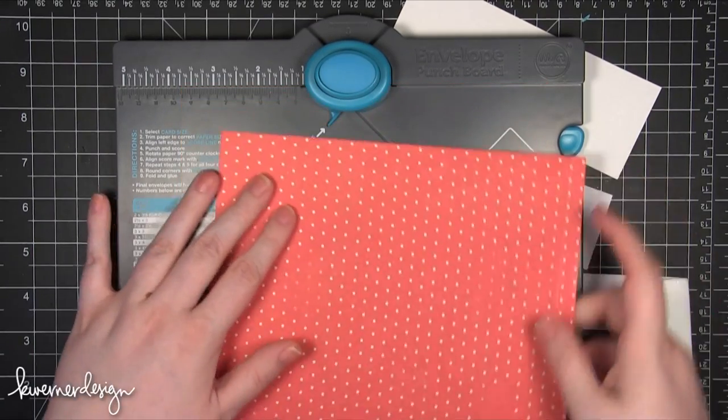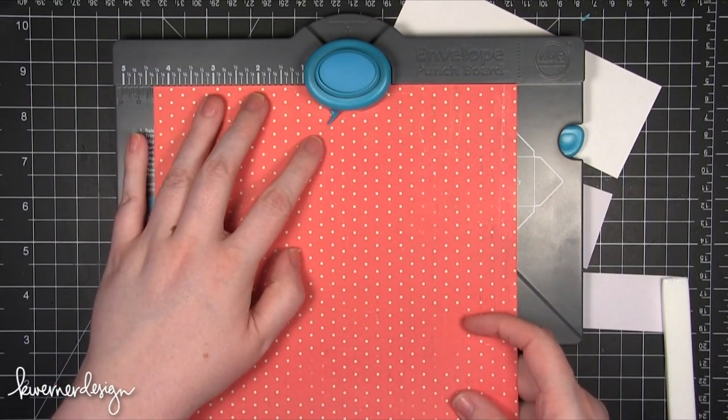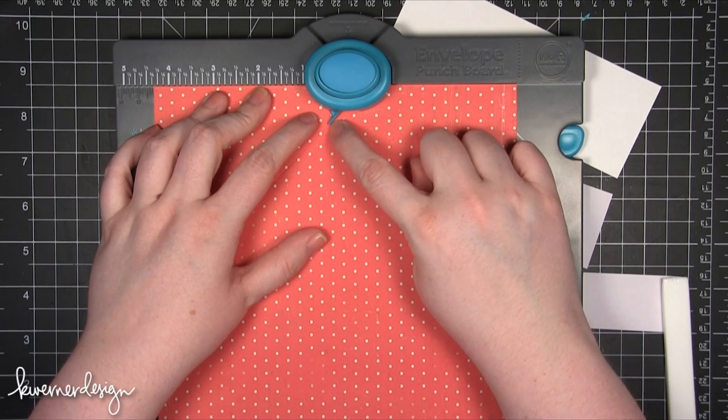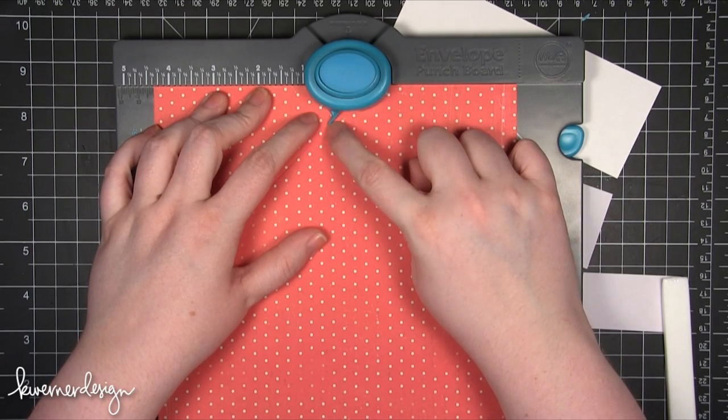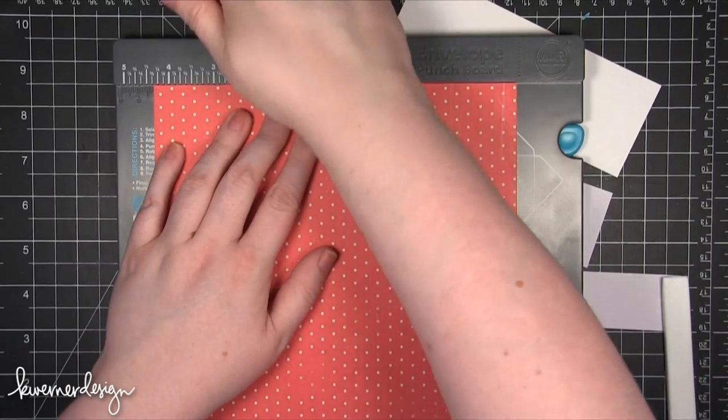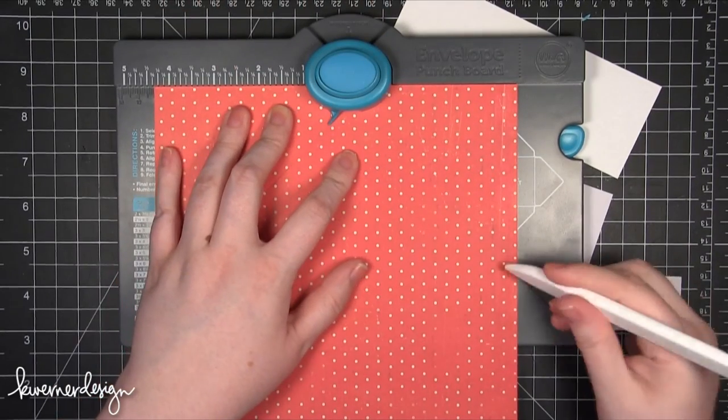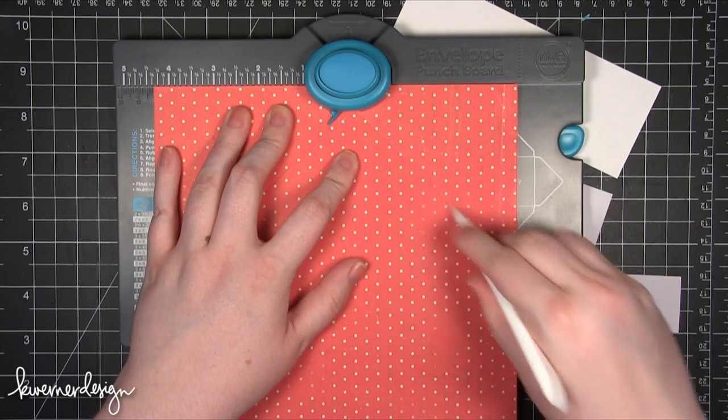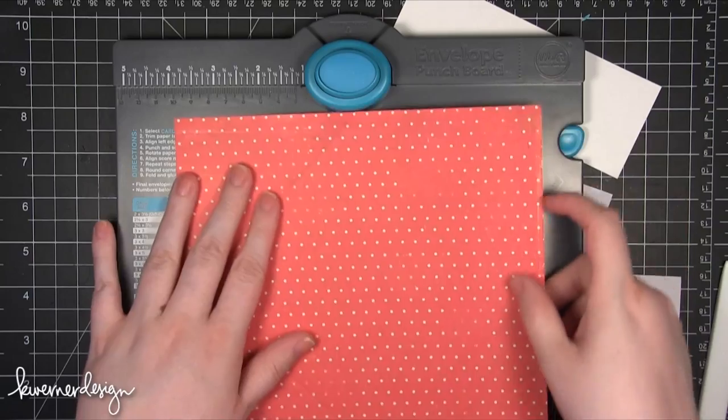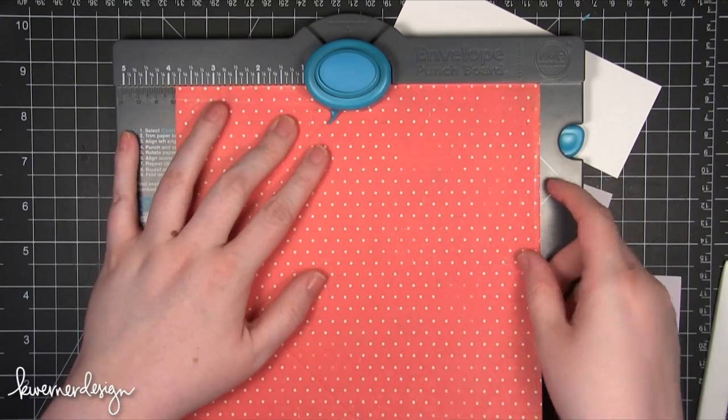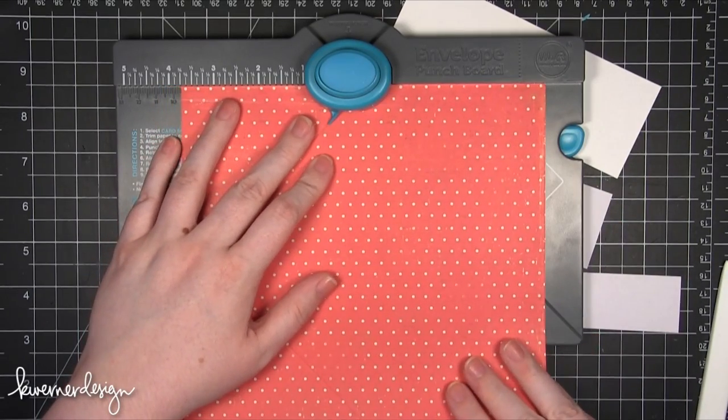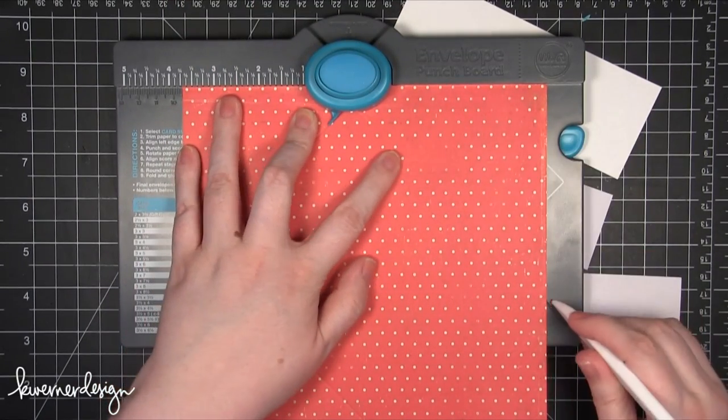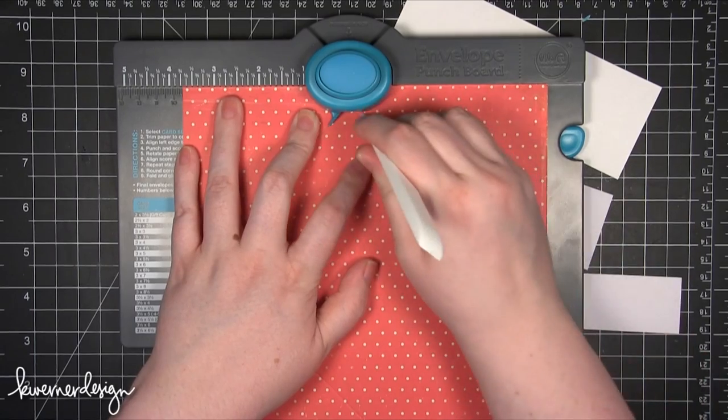And I'm going to turn it and I'm going to line up that score line. I don't know if you can see it on this patterned paper, but I'm lining up my score line with this little point on this punch here. So I'll punch again and then scoring up from this bottom corner. I'll turn it again.